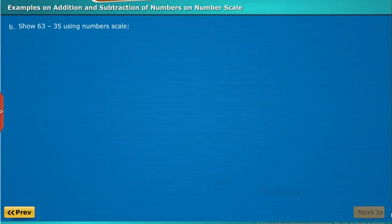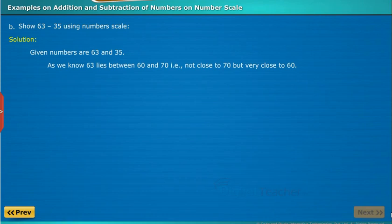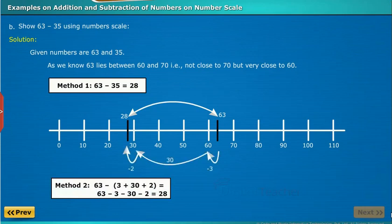Show 63 minus 35 using number scale. The given numbers are 63 and 35. As we know, 63 lies between 60 and 70 — not close to 70 but very close to 60. For method 1, as with the beads Mala, we count in the anti-clockwise direction on the number scale for subtraction. For method 2, we split 35 as 3 plus 30 plus 2. Thus, we do the subtraction as 63 minus 3 minus 30 minus 2, which equals 28.